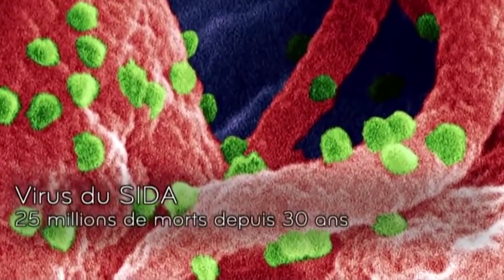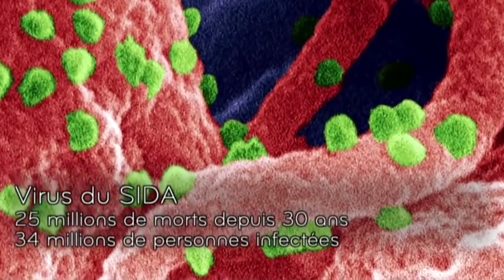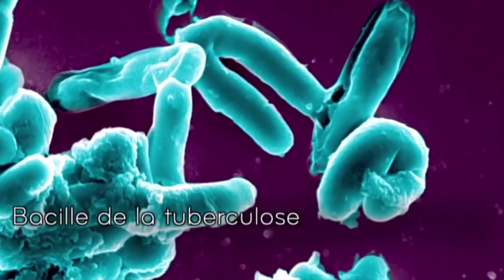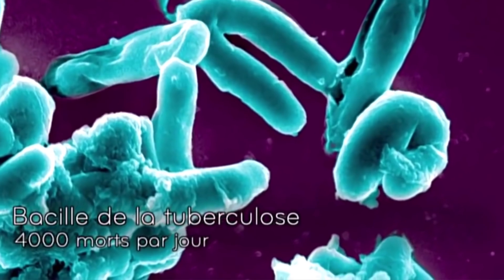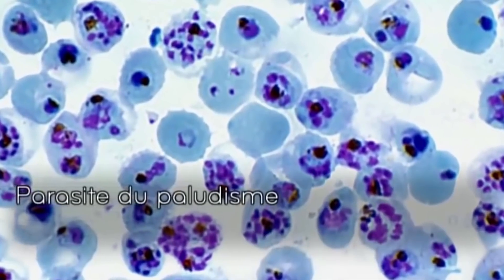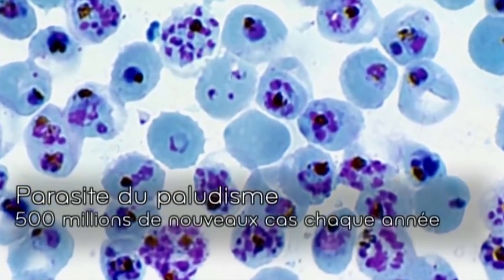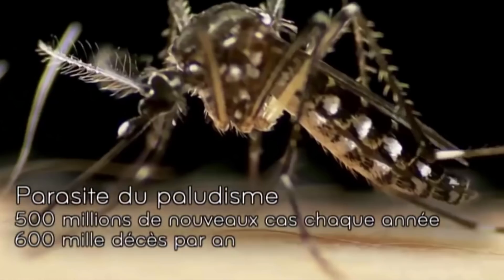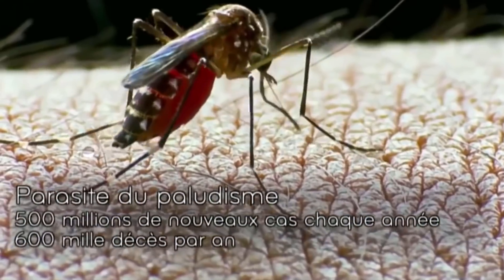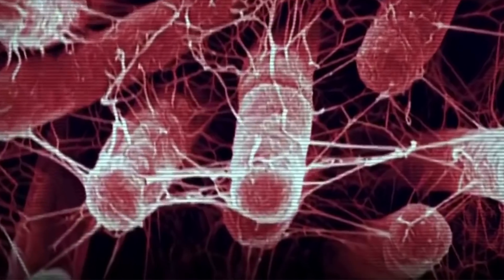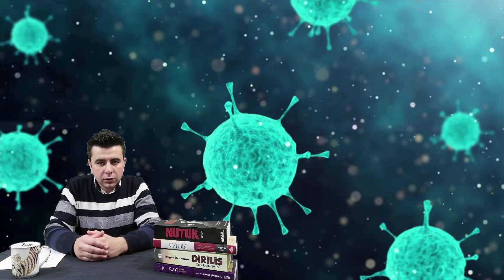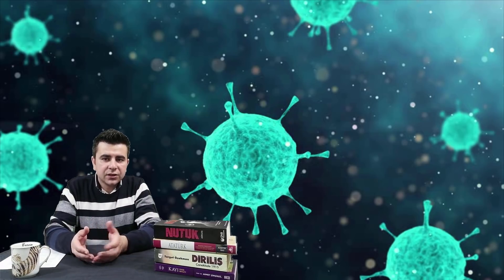1980'lerin başında çıkan AIDS virüsü sadece 25 milyon insanın ölümüne yol açtı. Tüberküloz basili ise her gün ortalama 4000 kişinin canını alıyor. İnsanların en kötü düşmanı sıralamasında 3. sırayı alan sıtma oluyor.